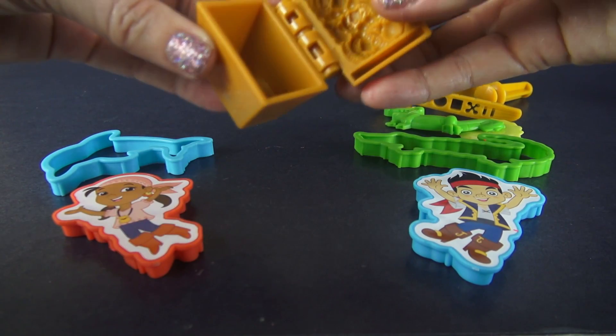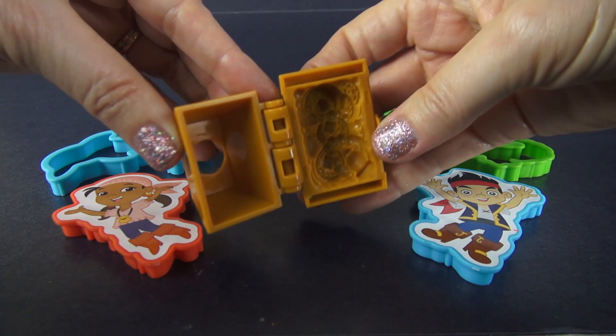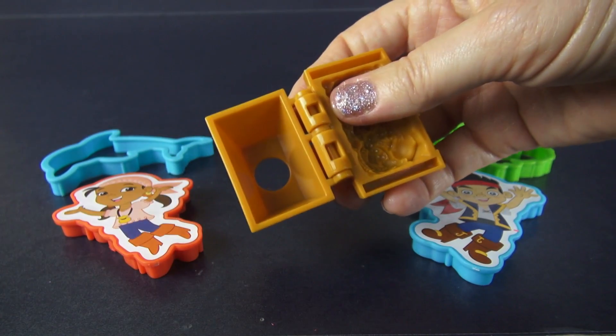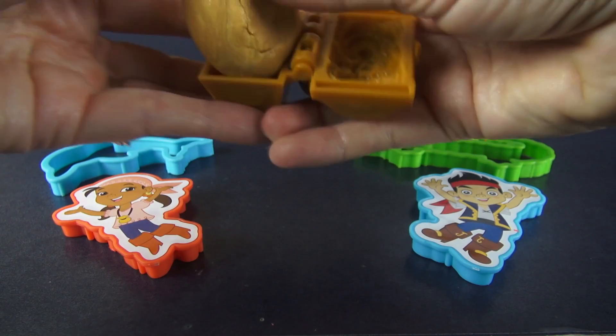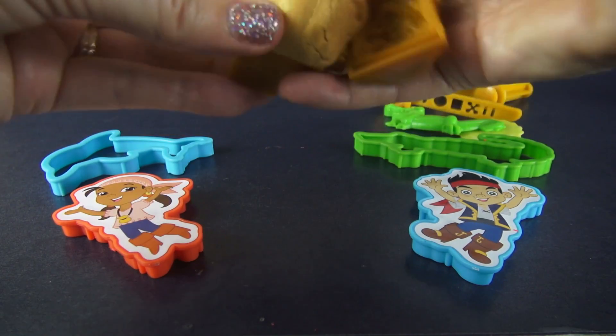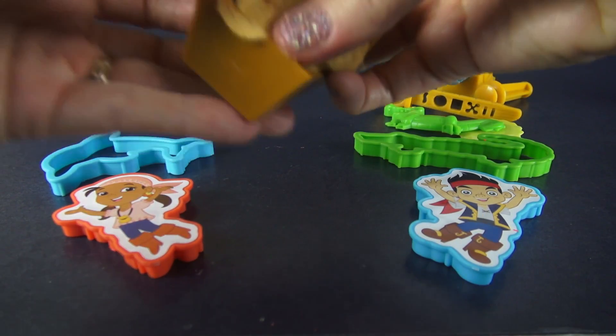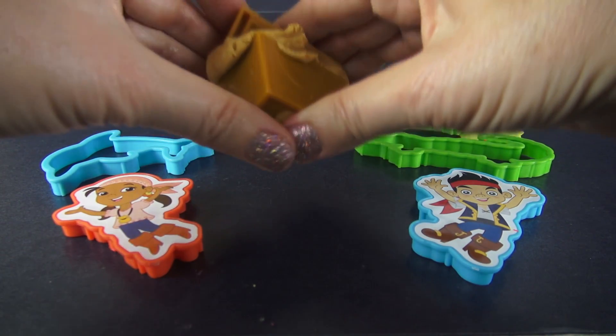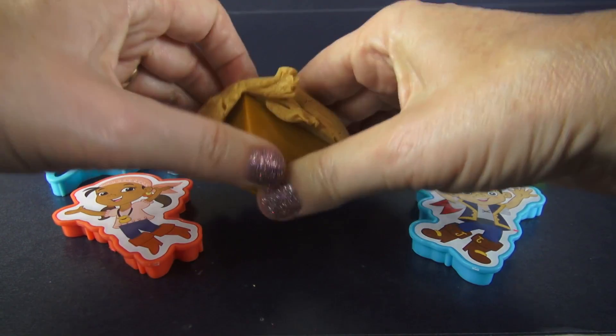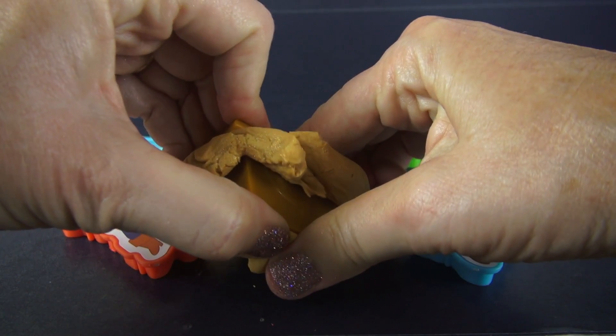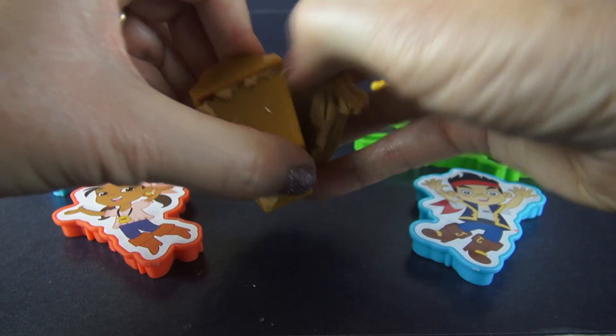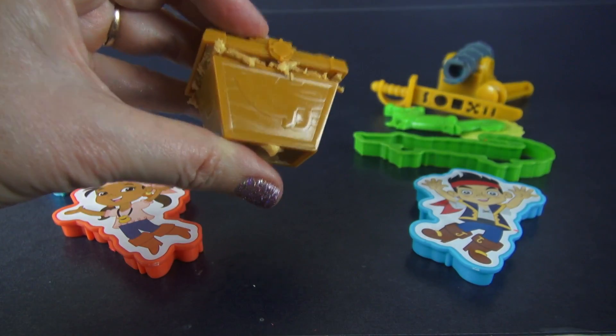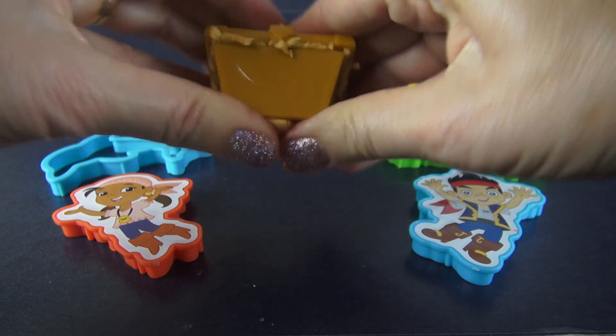Look at our treasure chest. This is called a book mold because it folds like a book. Here's our gold Play-Doh. Let's put some of that in there. Here we go. And then let's close it down like a book. Here we go. Get all the extra off here and I think we get some more extra Play-Doh off when we open it up.